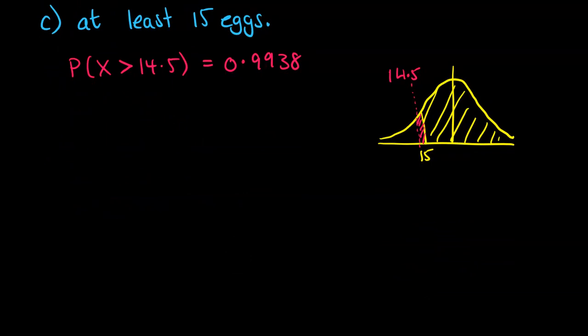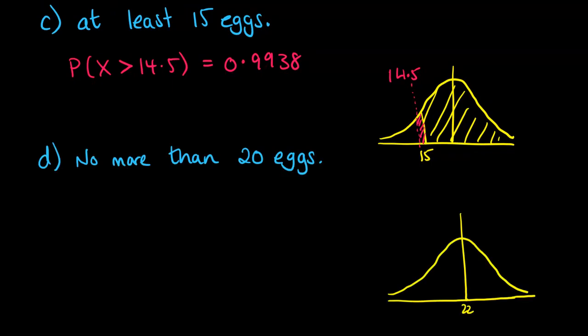All right, let's do one last one. So for no more than 20 eggs, we need to go everything up to and including the 20. So here's our 20. We're going to do everything up to and including 20 because it's no more than 20. So which side do I need to drop my half a point on to?